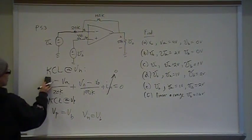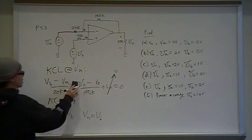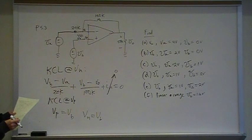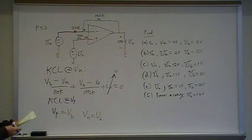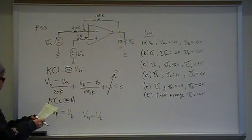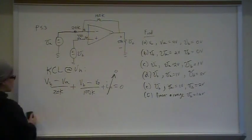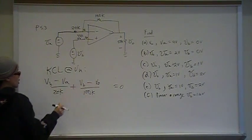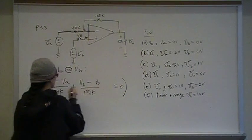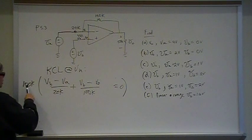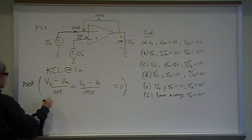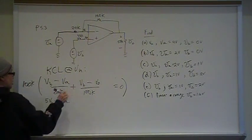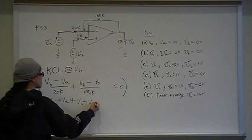So everywhere I see VN, I'm going to substitute a VB in it. So now my new KCL equation at VN is VB minus VA over 20 plus VB minus Vout over 100 equals 0. So now we have this relationship between Vout and VA and VB, and we're going to do algebra to solve it. I'm going to multiply this whole thing by 100K to get rid of fractions. That gives me 5 VB minus 5 VA plus VB minus Vout equals 0.